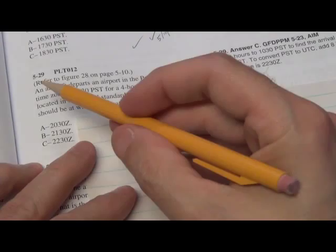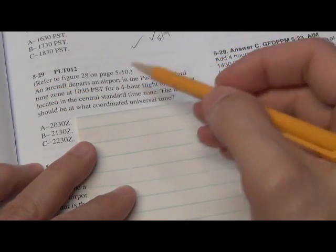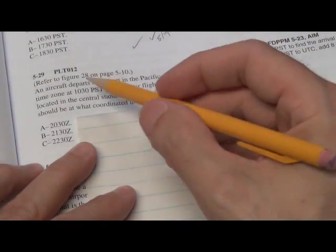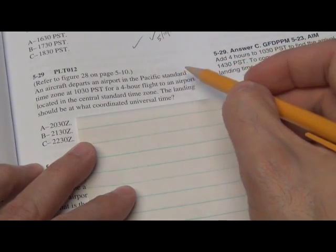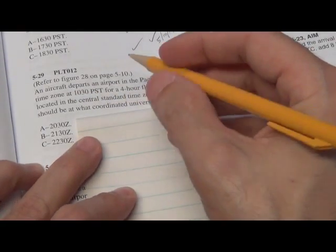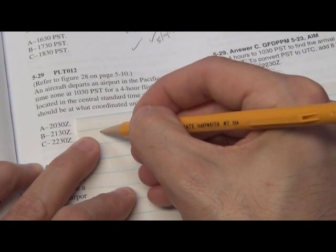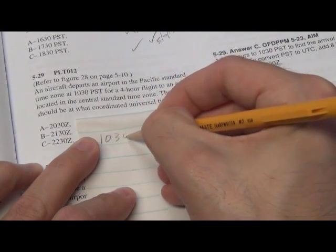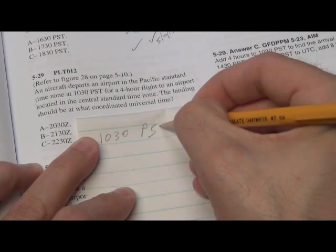Okay, let's do another one, question 529 on page 511. An aircraft departs an airport in the Pacific Standard Time Zone, 1030 Pacific Standard Time. So you write down 1030 Pacific Standard Time.